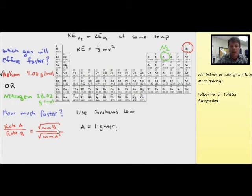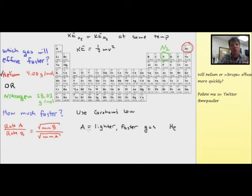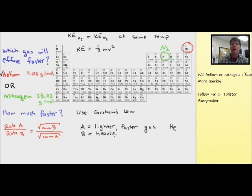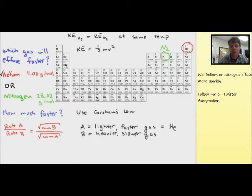Back to the equation. How do we pick which gas is gas A and which gas is gas B? Gas A is always — I would recommend — the lighter gas, which is the faster one. In this problem we're talking about helium. Gas B is your slower, heavier gas, so for this problem that's the nitrogen.